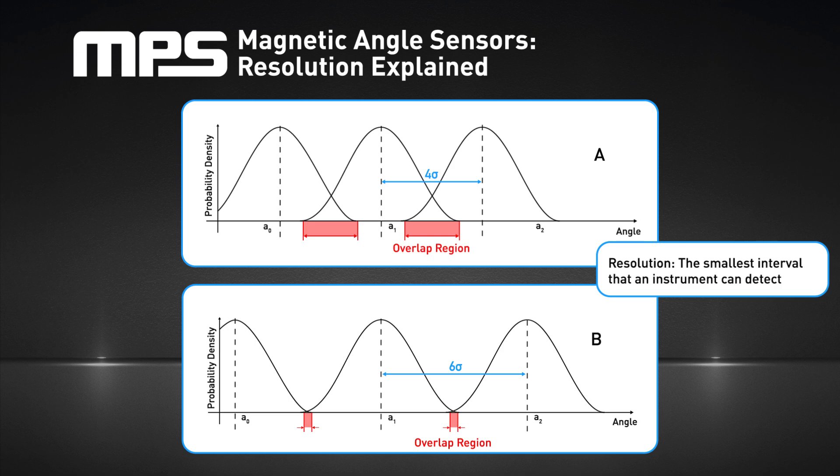This leads to a question: how far apart should two angles be in order to be able to distinguish both angles with a reasonably high probability? When the distance between the two angles is smaller than six standard deviations, the two noise distributions centered on the angles significantly overlap. If the result of the measurement falls in the overlap region, it is impossible to know if the true angle is angle A1 or A2.